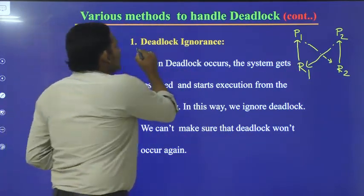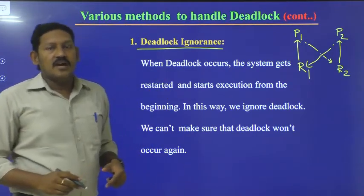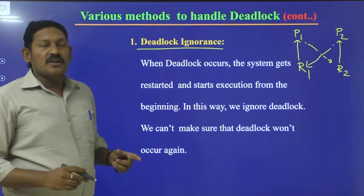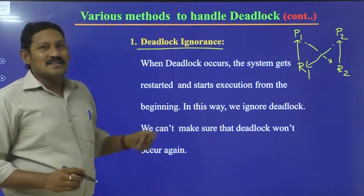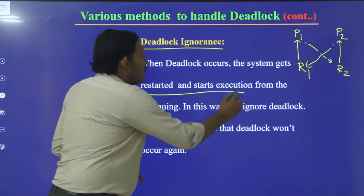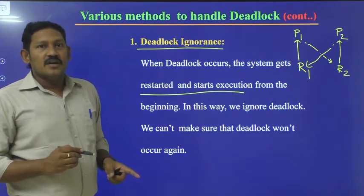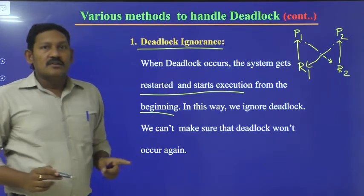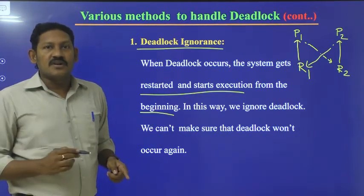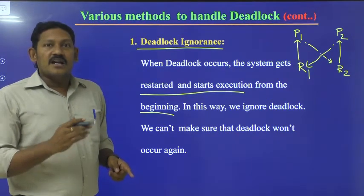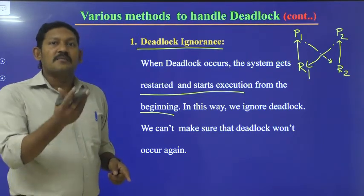So deadlock ignorance means whenever a deadlock occurs, in order to solve that conflict, we can simply restart the system — restart the execution from the beginning. By this we simply ignore the deadlock. However, there is no guarantee that if we restart the execution the deadlock will not come again. There is a chance the deadlock may or may not occur again.